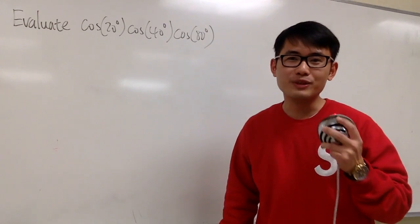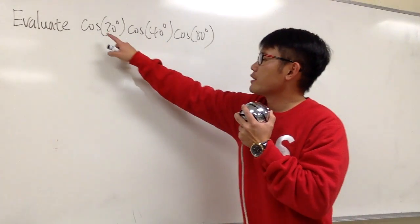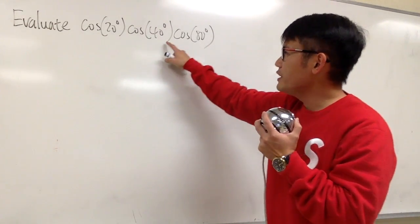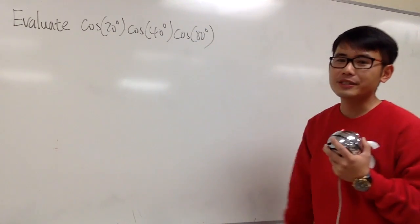Let's do some math for fun, and this time we'll do some trick questions. We are going to evaluate cosine of 20 degrees times cosine of 40 degrees times cosine of 80 degrees.